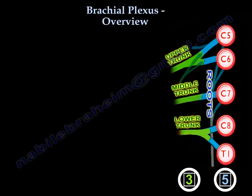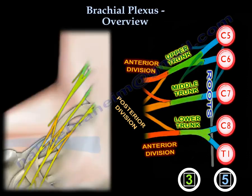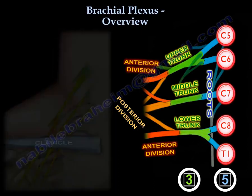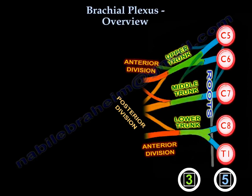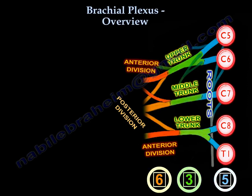So five roots give you three trunks. Each of the three trunks divides into an anterior and posterior division. These divisions pass behind the clavicle. So three trunks will give you six divisions: five roots, three trunks, six divisions.